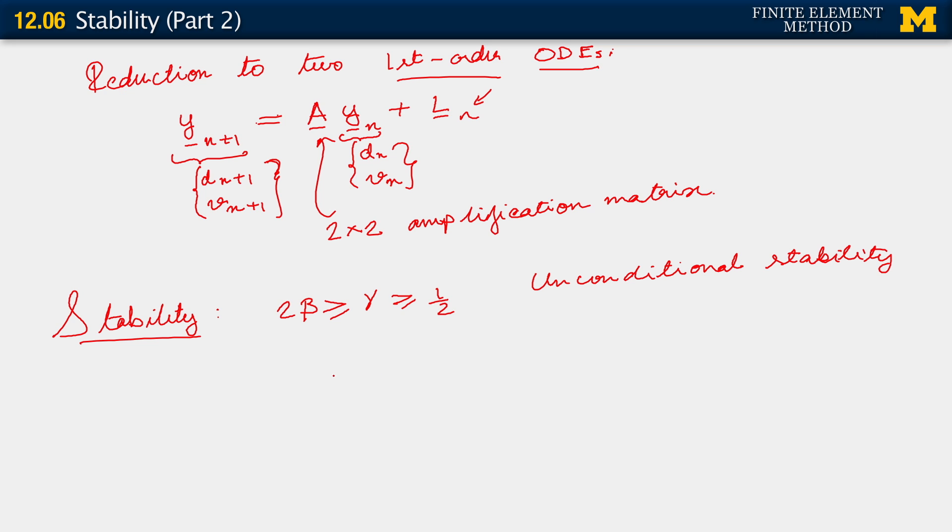If on the other hand, gamma being greater than or equal to half, beta lies between 0 and gamma over 2, these conditions together give us conditional stability.